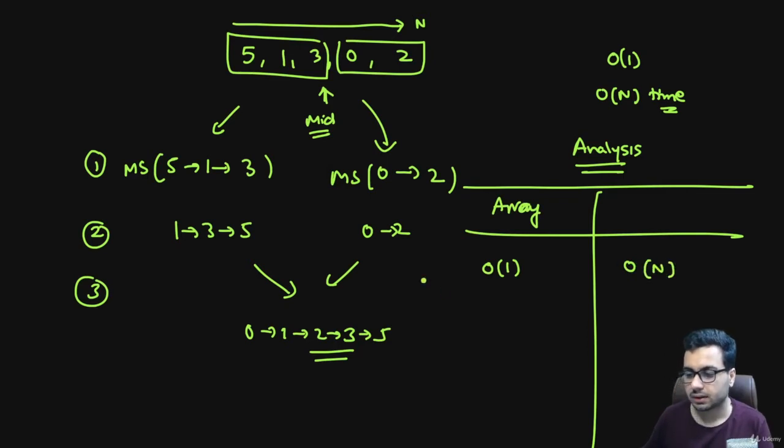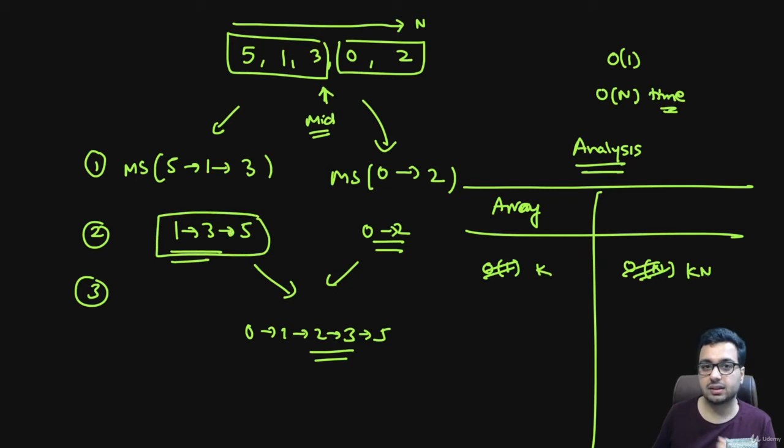The second step is sorting these two linked lists. Let me just write it simply as kn instead of writing it like this. To sort an array of size n, let us say the total time is T(n). Then to sort two arrays of size n/2, it takes 2T(n/2) time.